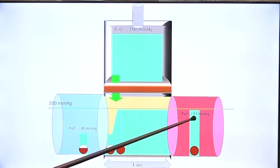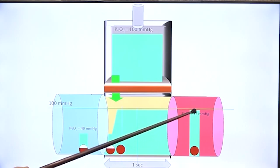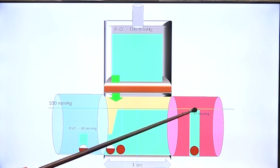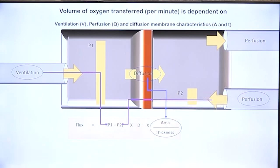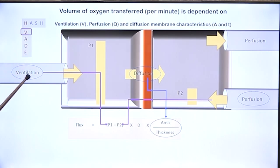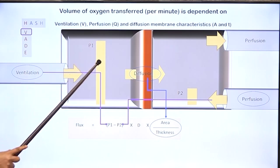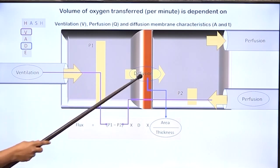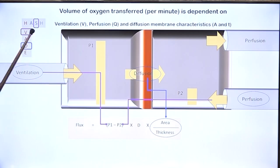The arterial blood will have a slightly lower oxygen partial pressure than the alveolus, and this small difference is what we call the alveolar-arterial oxygen difference. Ventilation impairment can cause arterial hypoxia because P1 will be less and therefore the level to which P2 can increase will also be less. Diffusion impairment can cause arterial hypoxia — even if you have an adequate P1, transfer may not be efficient.